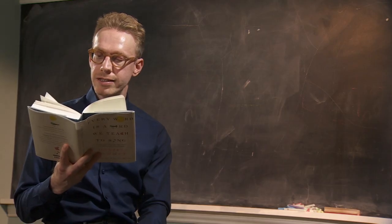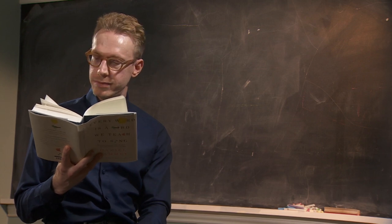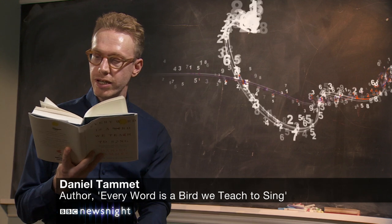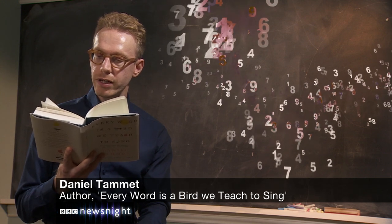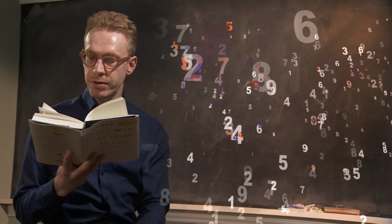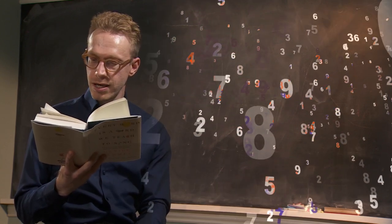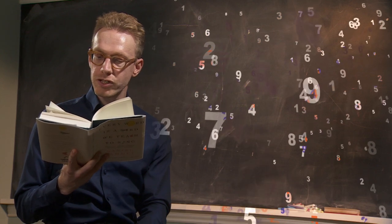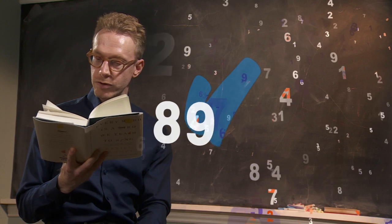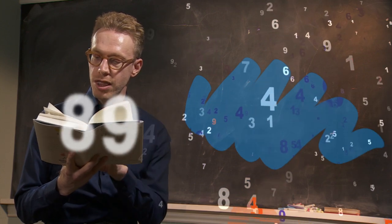In my mind, each number had a shape complete with color and texture and occasionally motion, a neurological phenomenon that scientists call synesthesia. And each shape, a meaning. The meaning could be pictographic. 89, for instance, was dark blue, the color of a sky threatening storm.